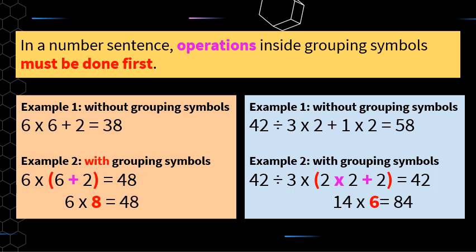I find it really useful — and this is good practice — when you've got an operation in a grouping symbol, do that first and write it down on a separate line. So 6 plus 2 is 8, write the 8, then multiply by 6, making sure equal signs are all in line. For example one on the blue side without grouping symbols, the answer is 58. But with grouping symbols I do those operations inside first: 2 times 2 is 4, plus 2 is 6, then 42 divided by 3 is 14, times 6 is 84.